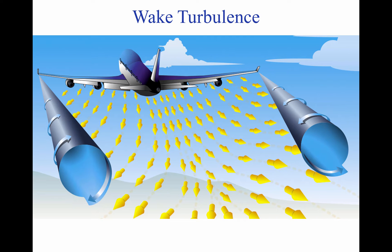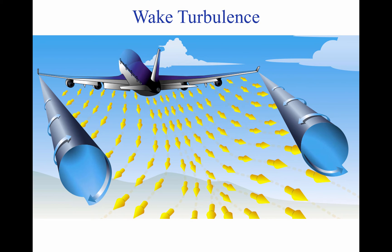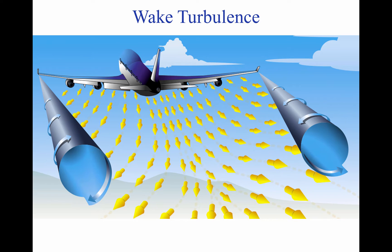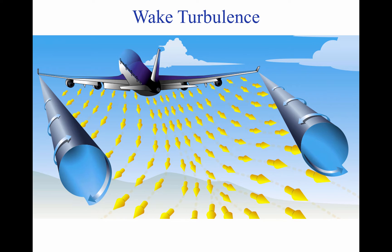Wake turbulence. All aircraft generate wake turbulence while in flight. This disturbance is caused by a pair of counter-rotating vortices trailing from the wingtips. The vortices from larger aircraft pose problems to encountering aircraft, imposing rolling moments exceeding the roll control authority of the encountering aircraft. The turbulence generated within the vortices can also damage aircraft components and equipment if encountered at close range. A pilot must envision the location of the vortex wake and adjust the flight path accordingly. During ground operations and takeoff, jet engine blast can cause damage and upset smaller aircraft at close range, so pilots should maintain adequate separation.